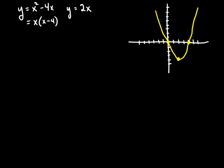So from that we can draw a reasonably accurate graph of x squared minus 4x, passing through those specific points.